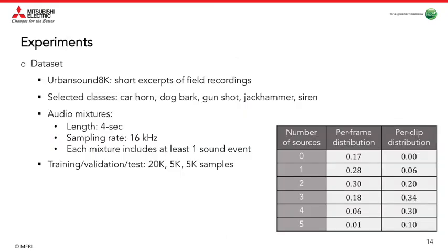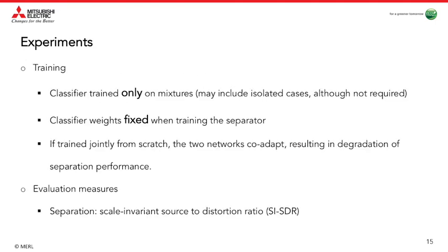In our experiments, we used audio excerpts from the UrbanSound 8K dataset. Five sound classes were used for data generation: car horn, dog bark, gunshot, jackhammer, and siren. The table shows the distributions of number of sound sources per frame or per clip in our training dataset — for example, 30% of mixture frames contain two sound sources, and 10% of mixture clips contain five sound sources. It is important to emphasize that the classifier network is trained only on mixtures and its weights are fixed when training the separator, as training the two networks jointly from scratch results in degraded separation quality, because the classifier learns to forgive the separator's mistakes.